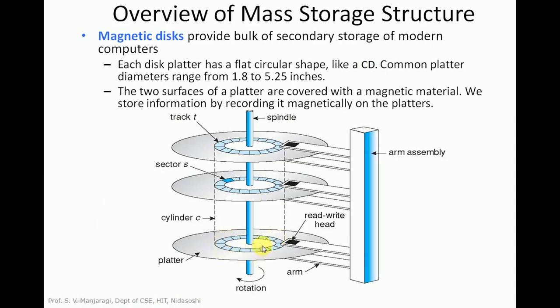The platter is logically divided into tracks, and the tracks are subdivided into sectors. A set of tracks at one arm position forms a cylinder. The number of sectors under a particular head position forms a cylinder. There are thousands of cylinders in a disk, and each track may contain hundreds of sectors.